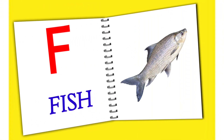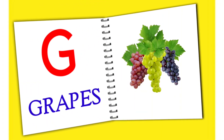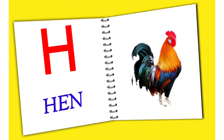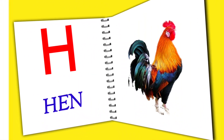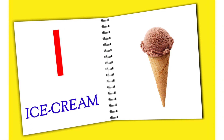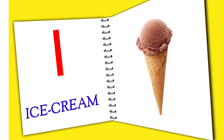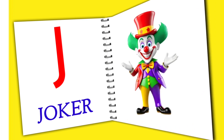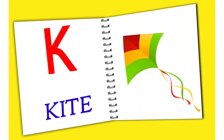F for fish, G for grass, H for ham, I for ice cream, J for joker, K for kite.